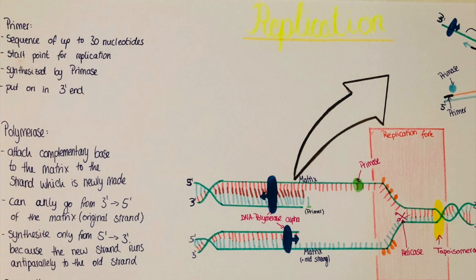That indicates the direction in which the processes are happening. So the primer is attached by the primase and builds the start point for the replication. The replication runs in 3' to 5' direction, so that's why the primer is put on the 3' end.